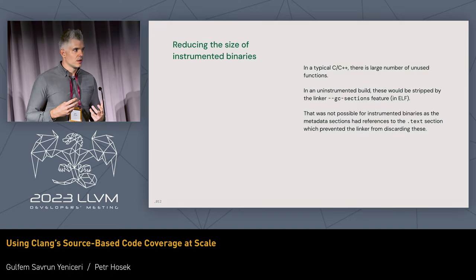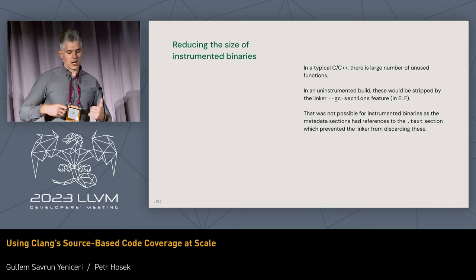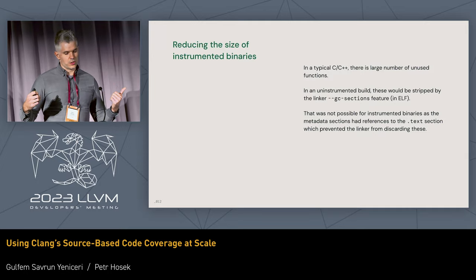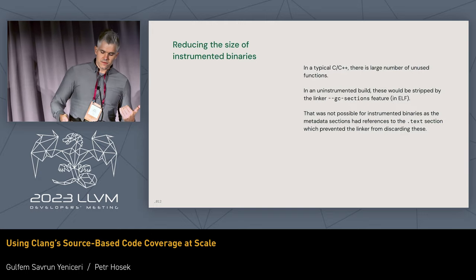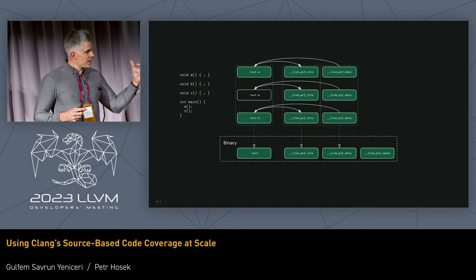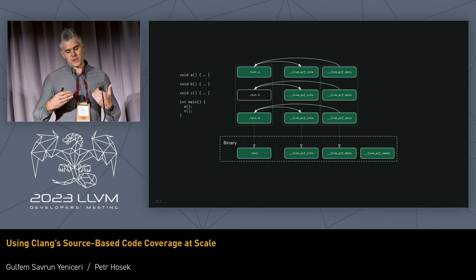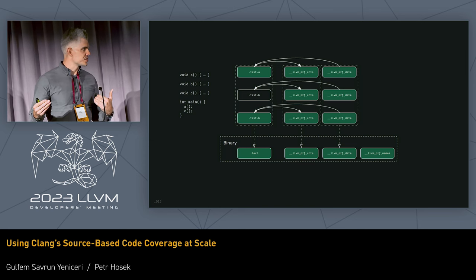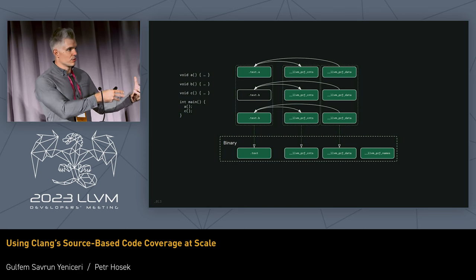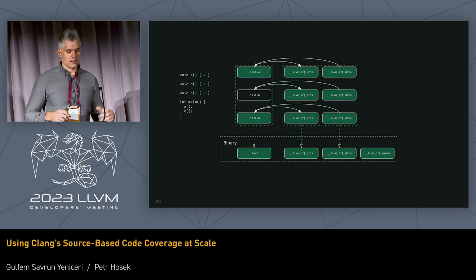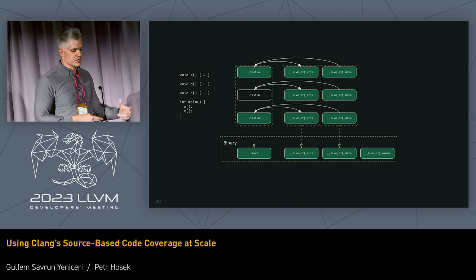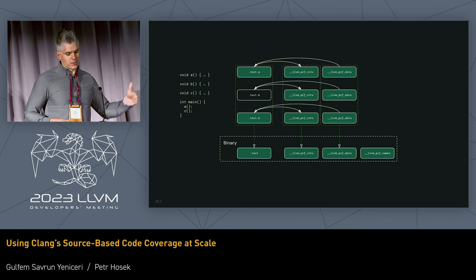Upon further examination, we found that the `-gc-sections` flag — which garbage-collects unused sections from binaries — doesn't work when using coverage instrumentation. The reason is that when you compile your code, the compiler generates additional sections for counters, metadata, and names. These sections have cross-references back to the original function section, and these references prevent the linker from identifying unused functions. So even if a function like `b` is unused, the linker won't be able to garbage collect it.